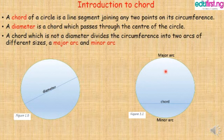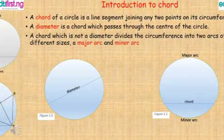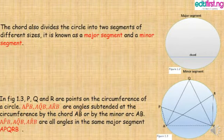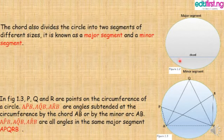This is an example here. This chord divides the circumference or circle into two different sizes. The first one, which is the larger part, is called the major arc, and the smaller part is called the minor arc. The chord also divides the circle into two segments of different sizes, known as a major segment and a minor segment. This is the minor segment and this is the major segment.